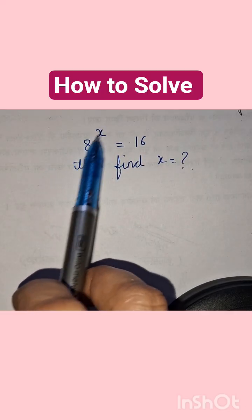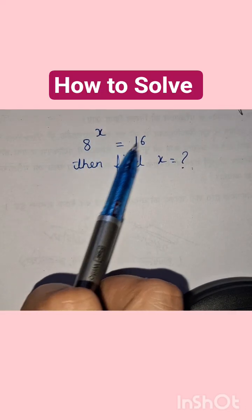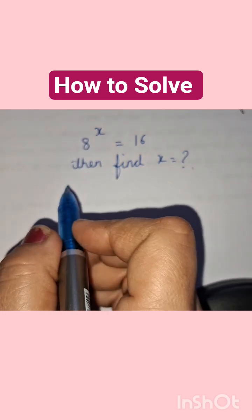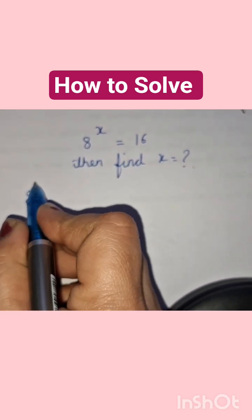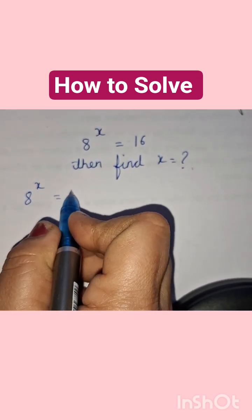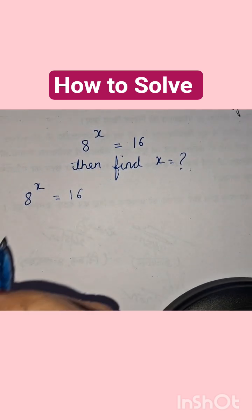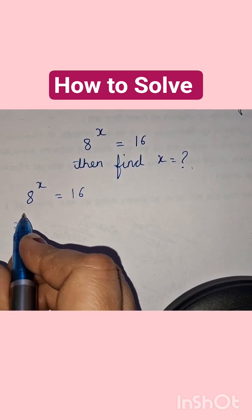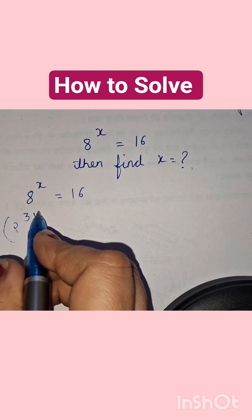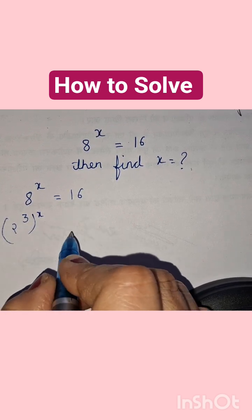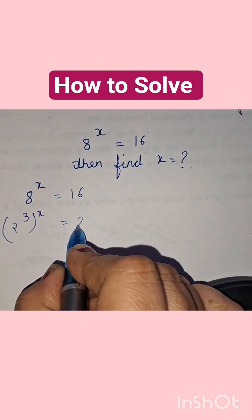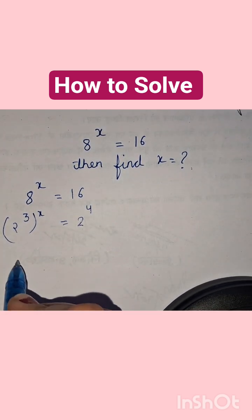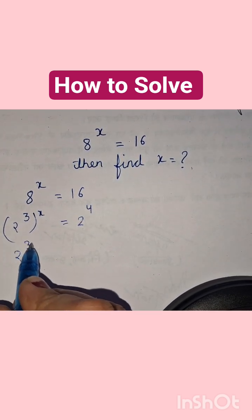In this equation, 8 to the power x equals 16, we have to find the value of x. We can write 8 as 2 to the power 3, so we get 2 to the power 3 to the x. And 16 we can write as 2 to the power 4, so this becomes 2 to the power 3x equals 2 to the power 4.